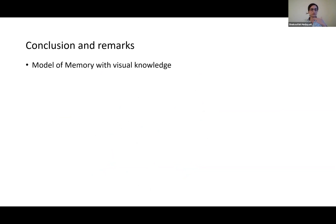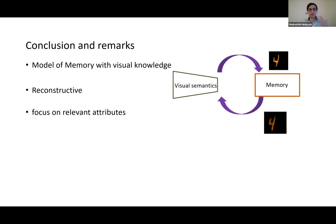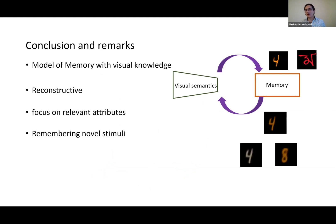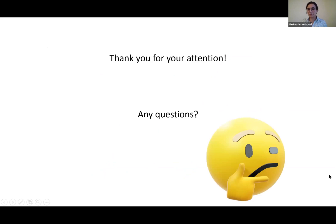In the end, we proposed here a model of memory with visual knowledge. The model was reconstructive: for a given image, it could reconstruct the image. It could focus on a relevant attribute, whether shape or color, and also remember novel stimuli like a Bengali character. Thank you for your attention. I'd be happy to answer questions.